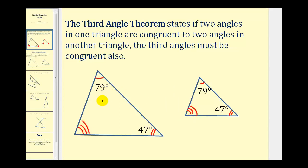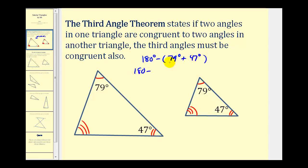That should make sense because the sum of the interior angles of any triangle is 180 degrees. So to determine the measure of the third angle in both triangles, we would take 180 degrees and subtract the sum of the two given angles: 79 degrees plus 47 degrees. 79 degrees plus 47 degrees would be 126 degrees, leaving the third angle to measure 54 degrees. And this would be true for both triangles.